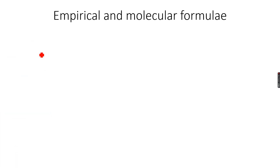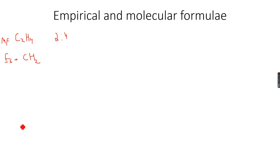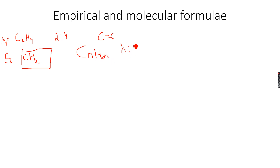If we have an alkene such as ethene, the molecular formula is C2H4. The carbon to hydrogen ratio is 2:4, and the empirical formula is CH2 because the ratio simplifies to 1:2. You should remember that all alkenes with only one carbon-carbon double bond will have an empirical formula of CH2, because they have the general formula CnH2n - cancelling the n's gives a 1:2 ratio. So 2:4, 3:6, 4:8 all reduce to 1:2.